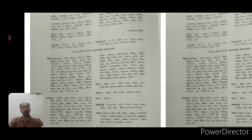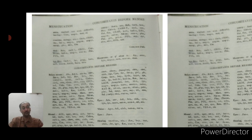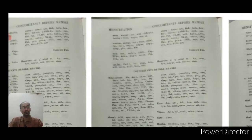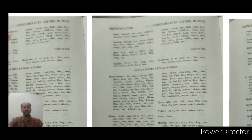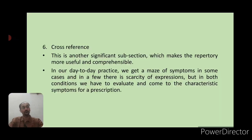More detailed concomitants are given — for example, in the chapter on menstruation, there are subsections: concomitants before menses, concomitants after menses, and concomitants at start of menses. The sixth and last subsection is cross reference.